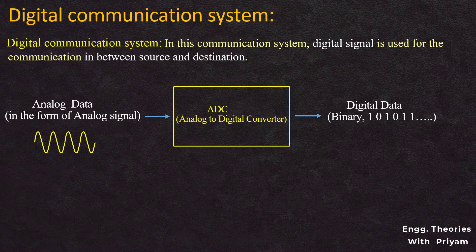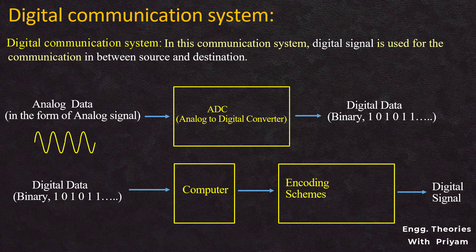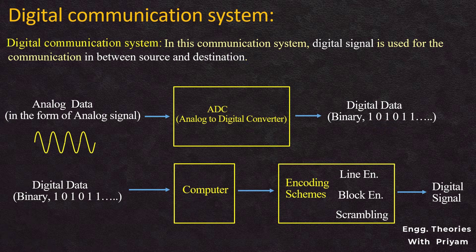During the ADC conversion, an image is split into pixels, video is split into frames, and audio is split into samples, to store them in digital format in computers. The information available in the computer is in digital data format. This digital data is converted to digital signal with the help of encoding systems. Encoding systems can be classified as line encoding, block encoding, and scrambling. Block encoding and scrambling may not be needed, but line encoding is always needed.